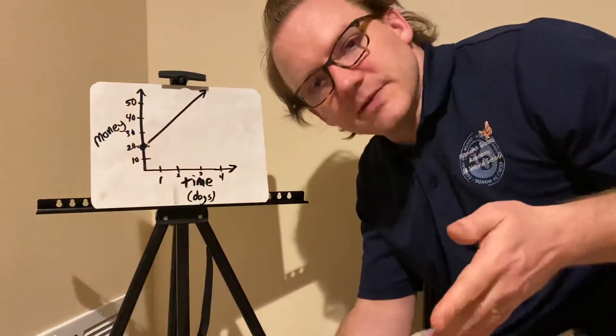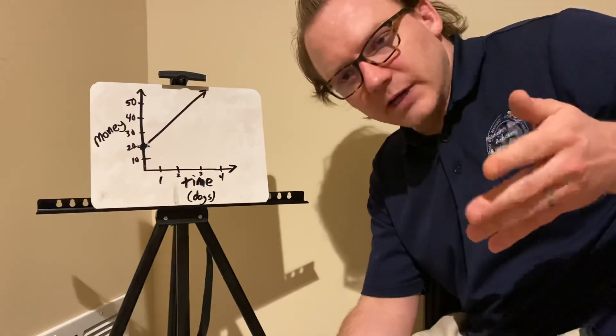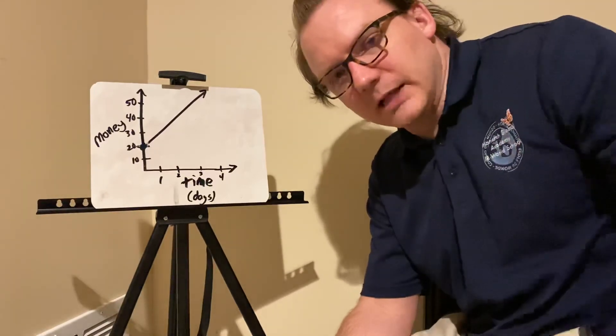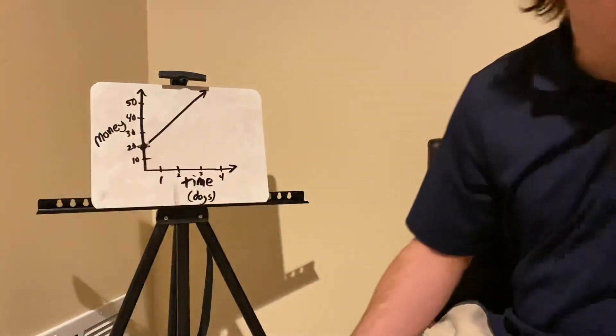Well, what that means is very simply that at 0 days, I started, I had $20. So I started with $20. That's what the y-intercept means, that you started with that amount. And that's it.